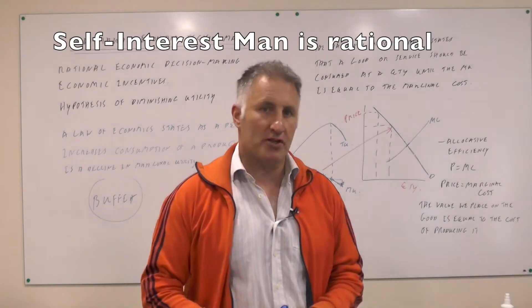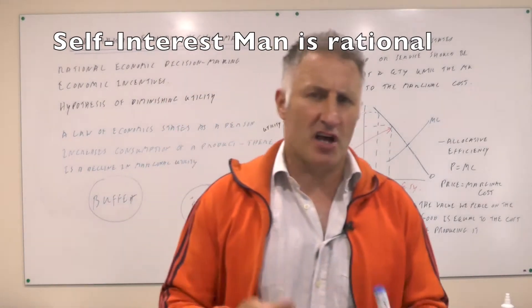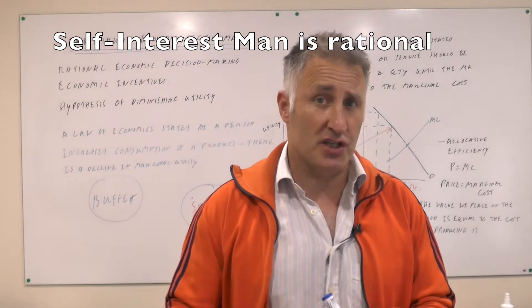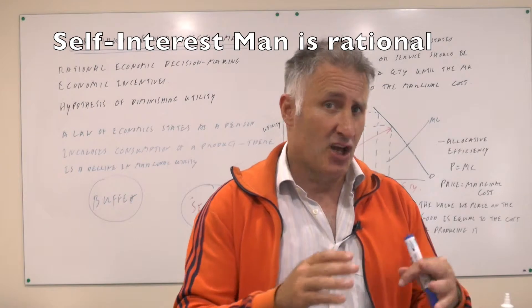This is the third lesson on microeconomics. In the first lesson we looked at unlimited desires and limited resources, the idea of opportunity cost, and how it is the job of an economist to allocate those resources.